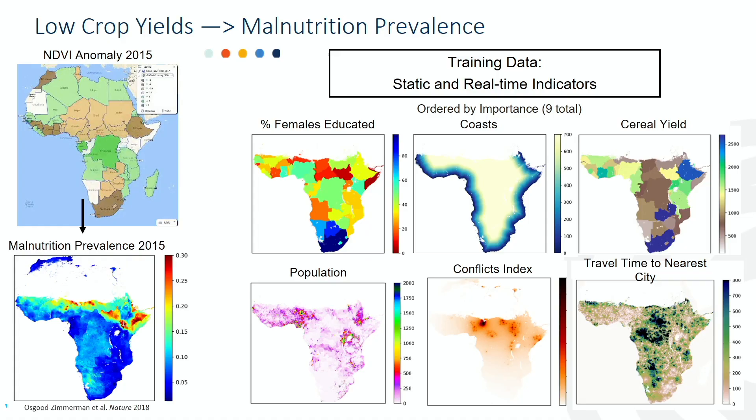The next phase of my project is geospatial malnutrition predictions, which includes low crop yields but is also dependent on a number of other parameters. I have assembled a training dataset for machine learning of malnutrition prevalence. Ordered by importance, these variables include the percent of females educated, distance to coasts, cereal yields, population, conflicts, and travel time to the nearest city.